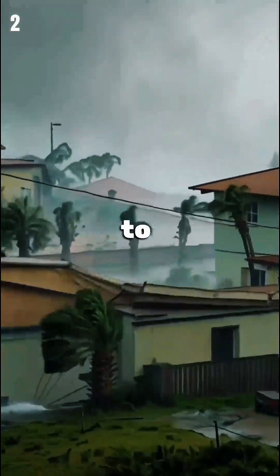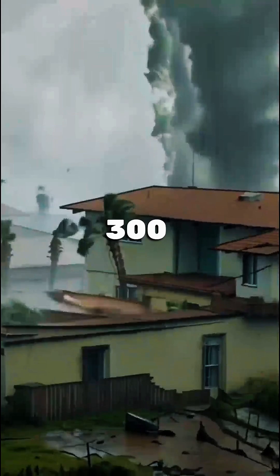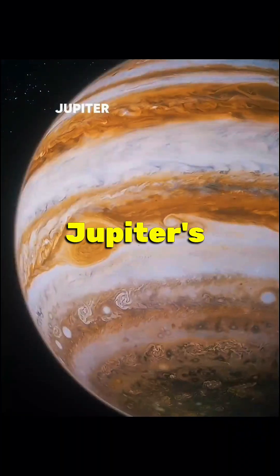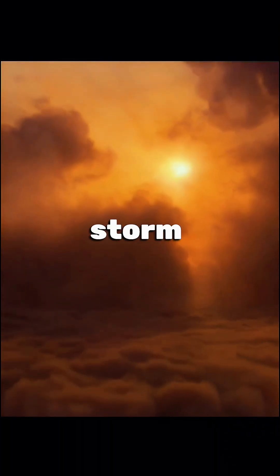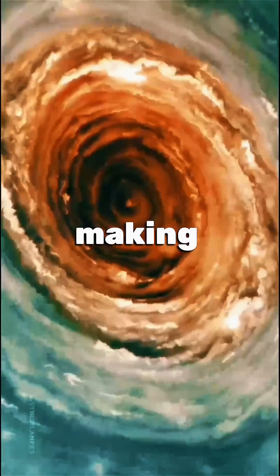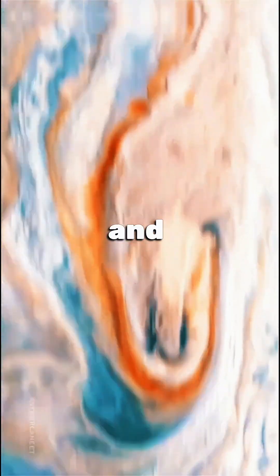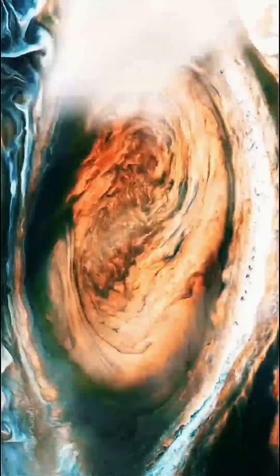Ever wondered what it's like to witness a storm that has lasted over 300 years? Jupiter's Great Red Spot is a massive storm so enormous that three Earths could fit inside it, making it one of the most fascinating and enduring features in our solar system.